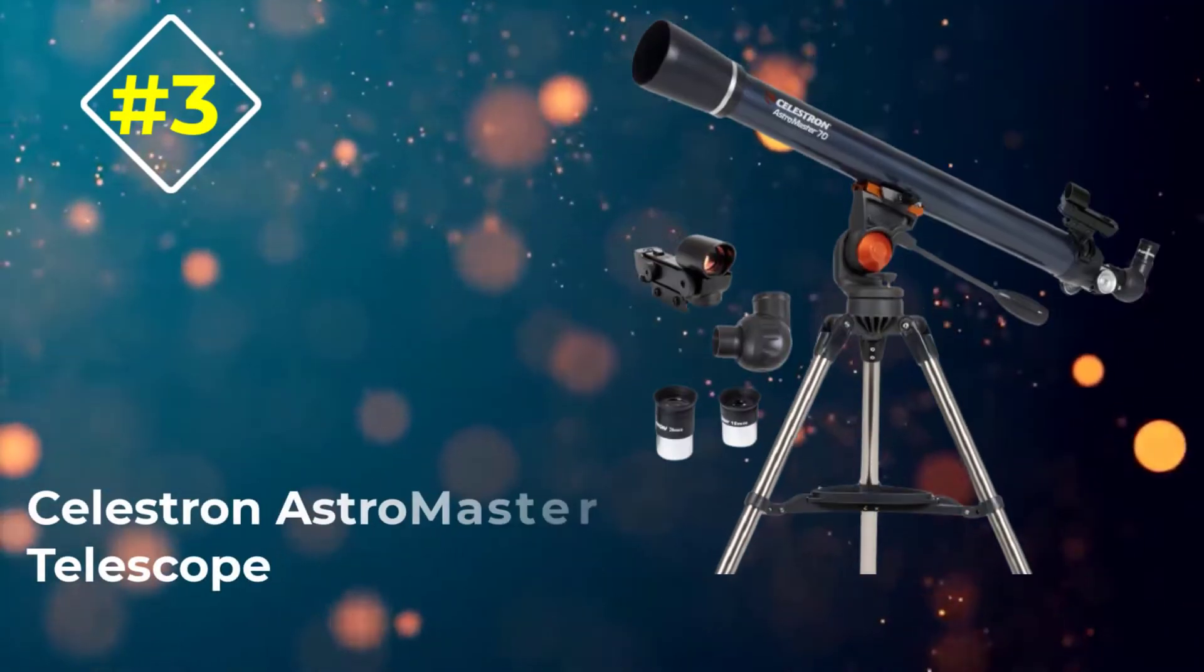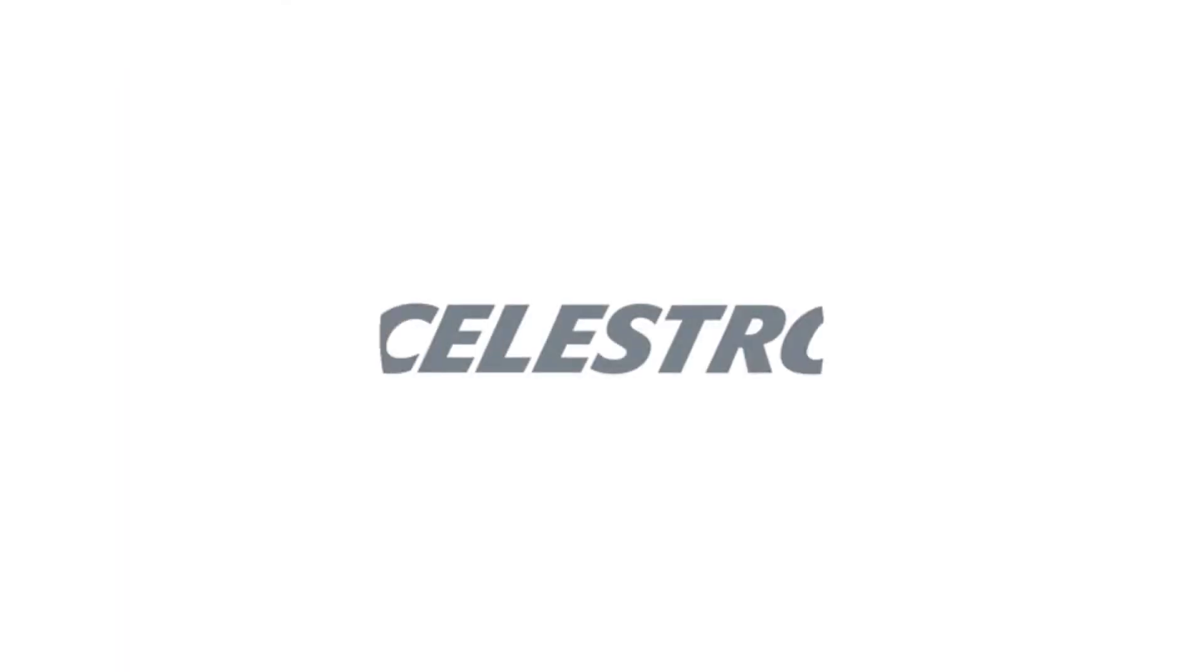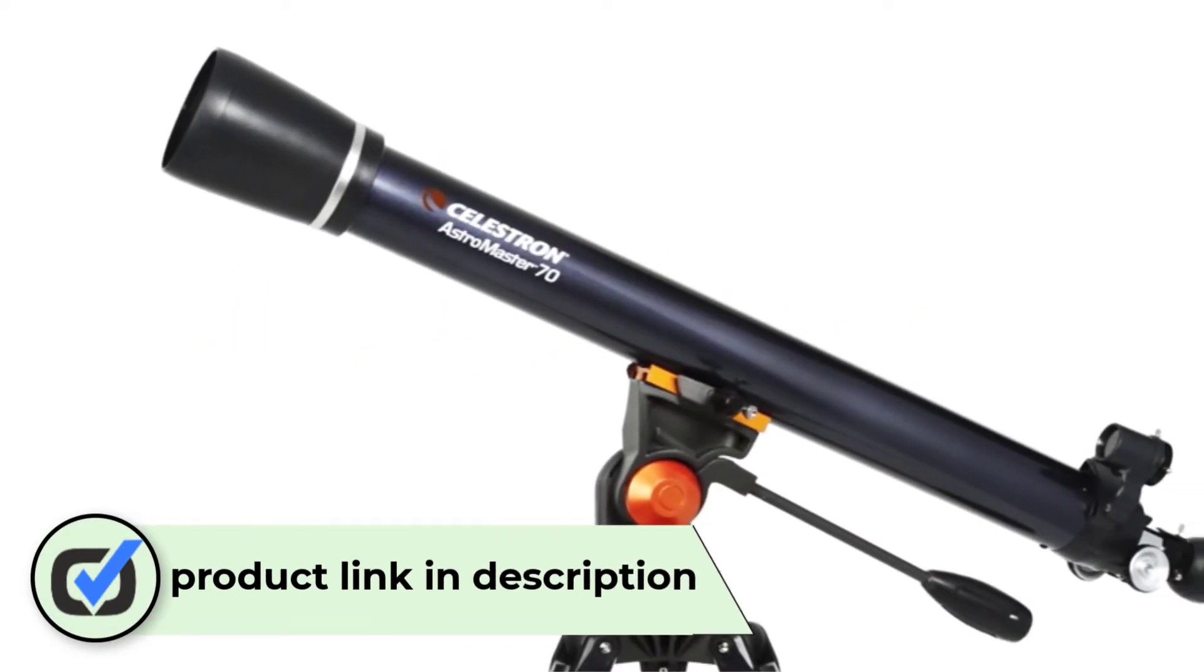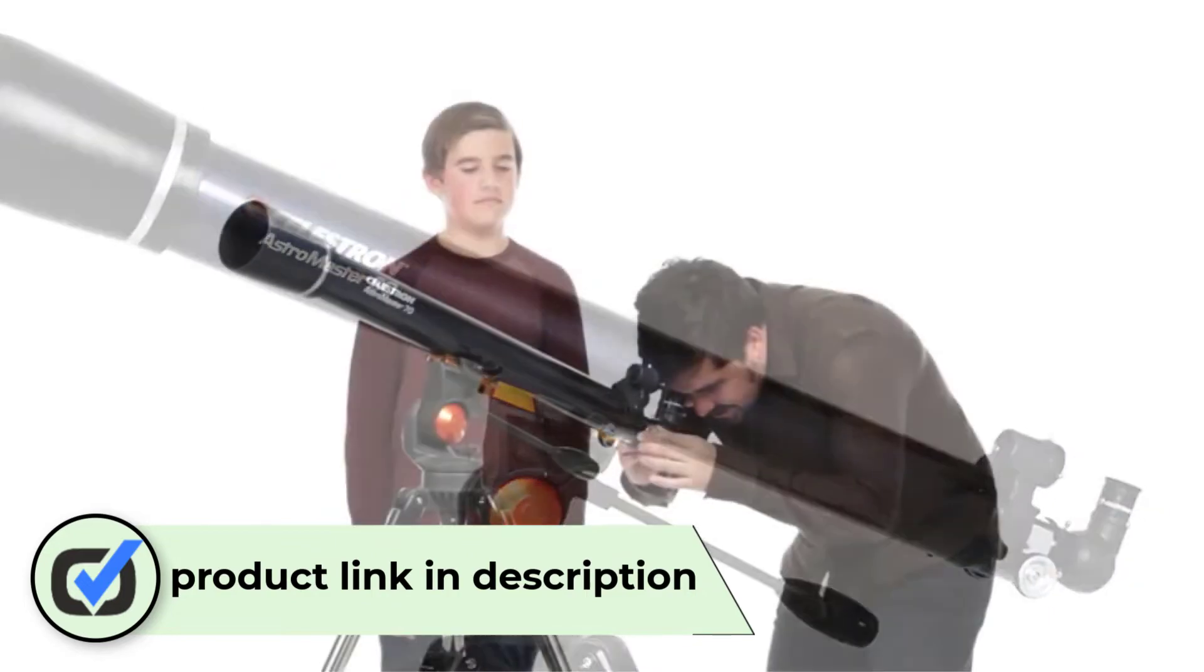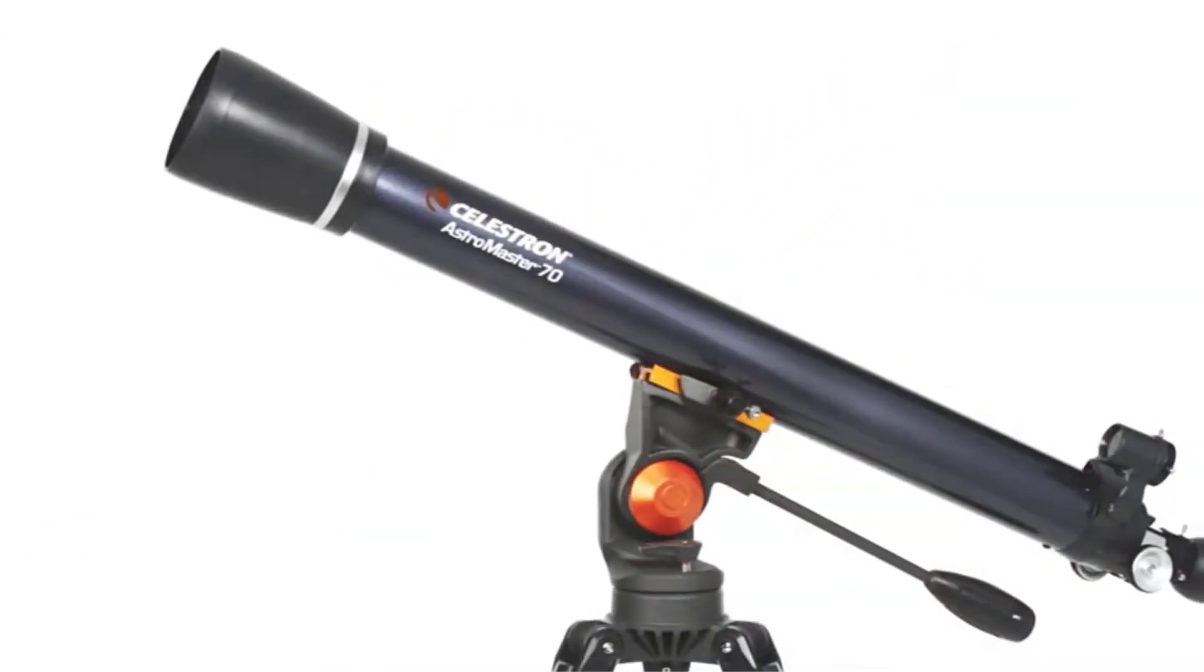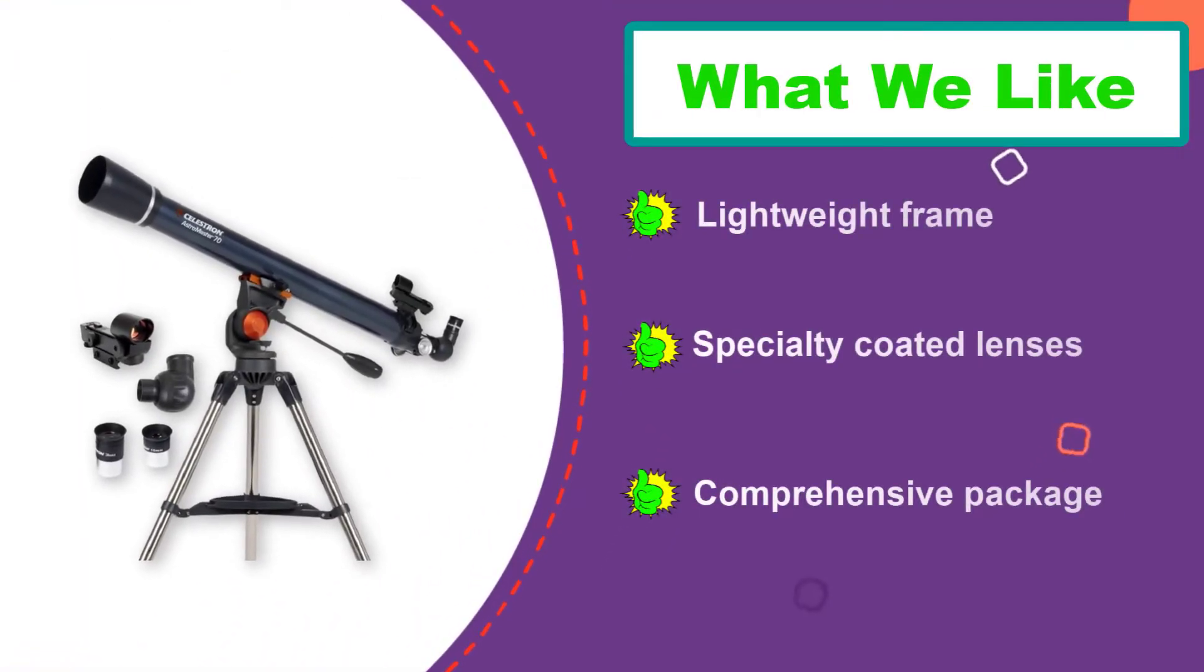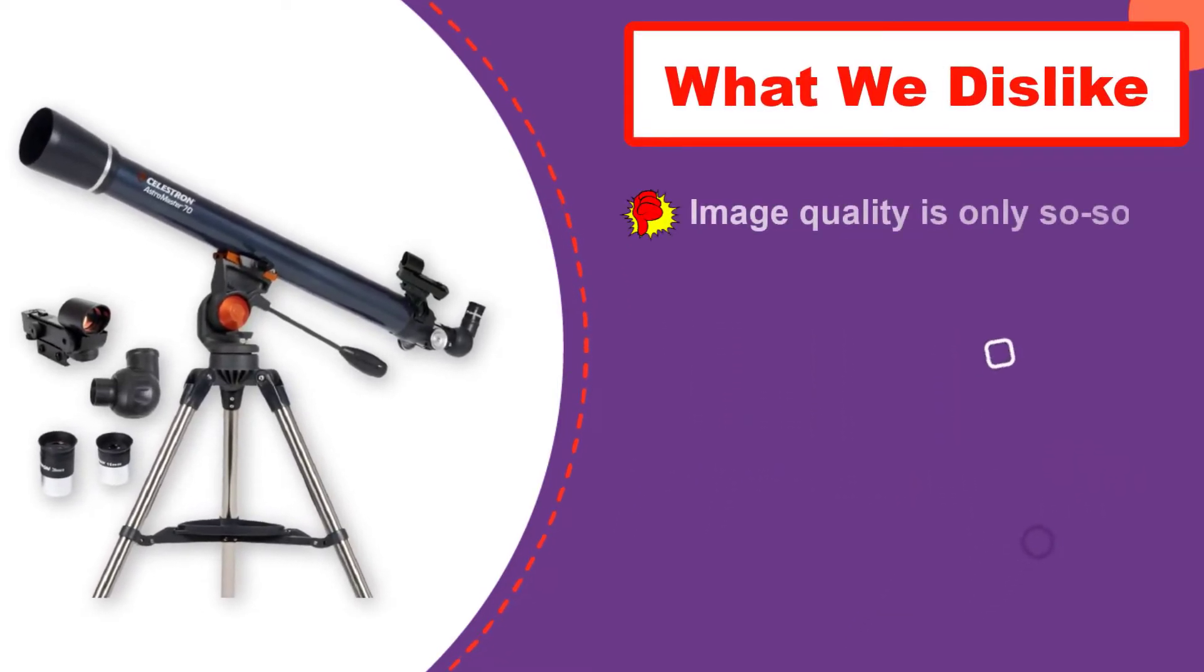Number 3: Celestron AstroMaster Telescope. In fourth place we have a very basic and affordable, though ultimately still effective, telescope. The Celestron AstroMaster features a lightweight frame and specialty coated lenses that are specifically designed to render high quality images even in the dark. The kit comes with two different lenses, a stand, and a software program that will help you to get used to your new telescope.